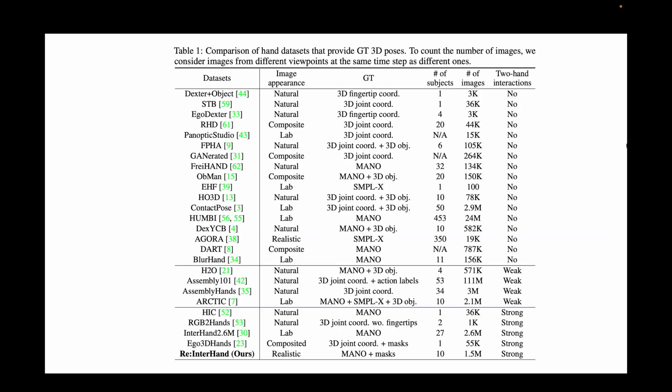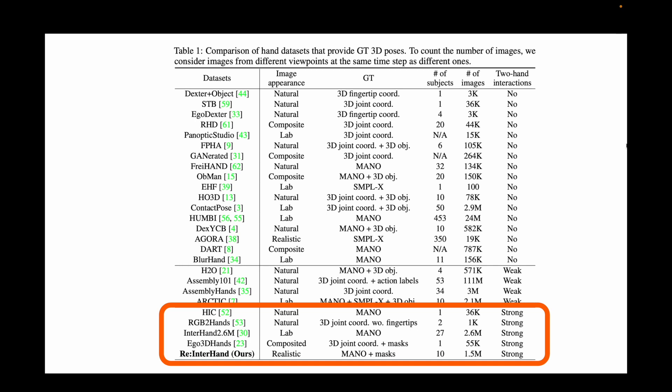This table shows a comparison of all publicly available 3D hand datasets. Despite the importance of understanding interaction between two hands, there are only a few datasets with strong interaction between two hands. Most of them, except for the InterHand 2.6M dataset, are small-scale, which are not enough to train neural networks.